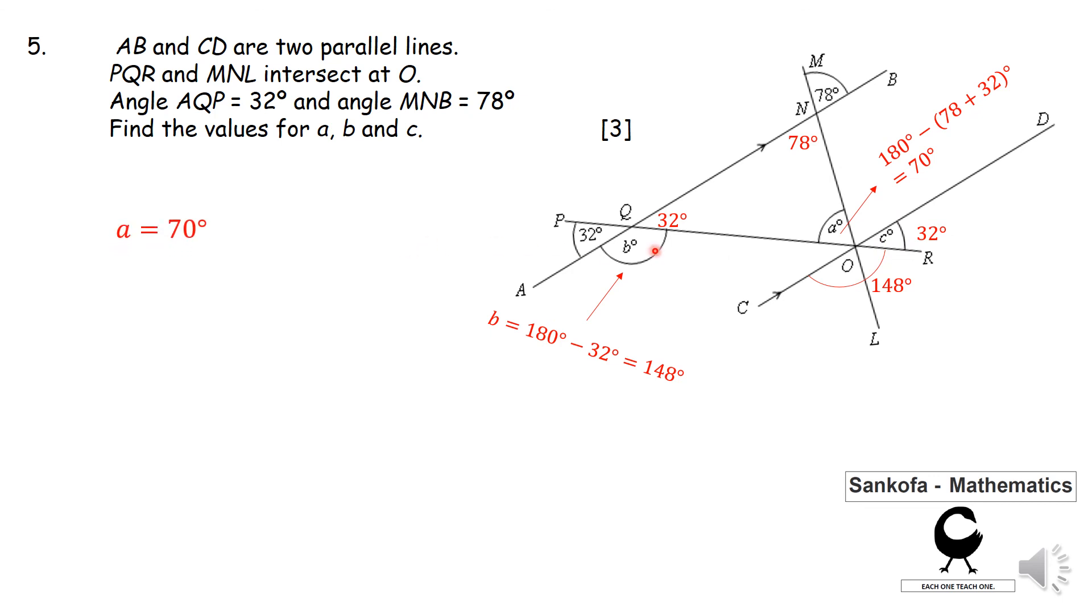Whatever method you have been using, you should find that a is 70 degrees, b is 148 degrees, and c is nothing but 32 degrees. So you can have different ways and different methods, but you need to work on the diagram. Take your pencil, and then you work out the missing information and the missing angles, and you apply all the rules and all the properties that you know of in order for you to find the missing angles that you are supposed to find.